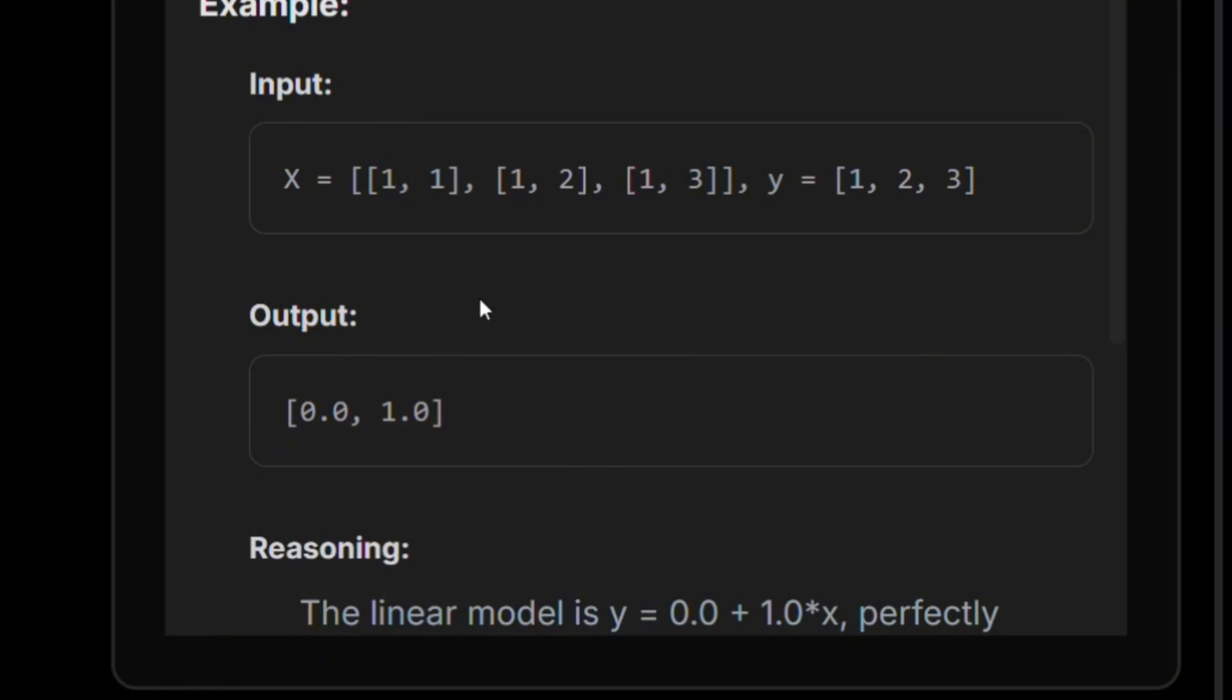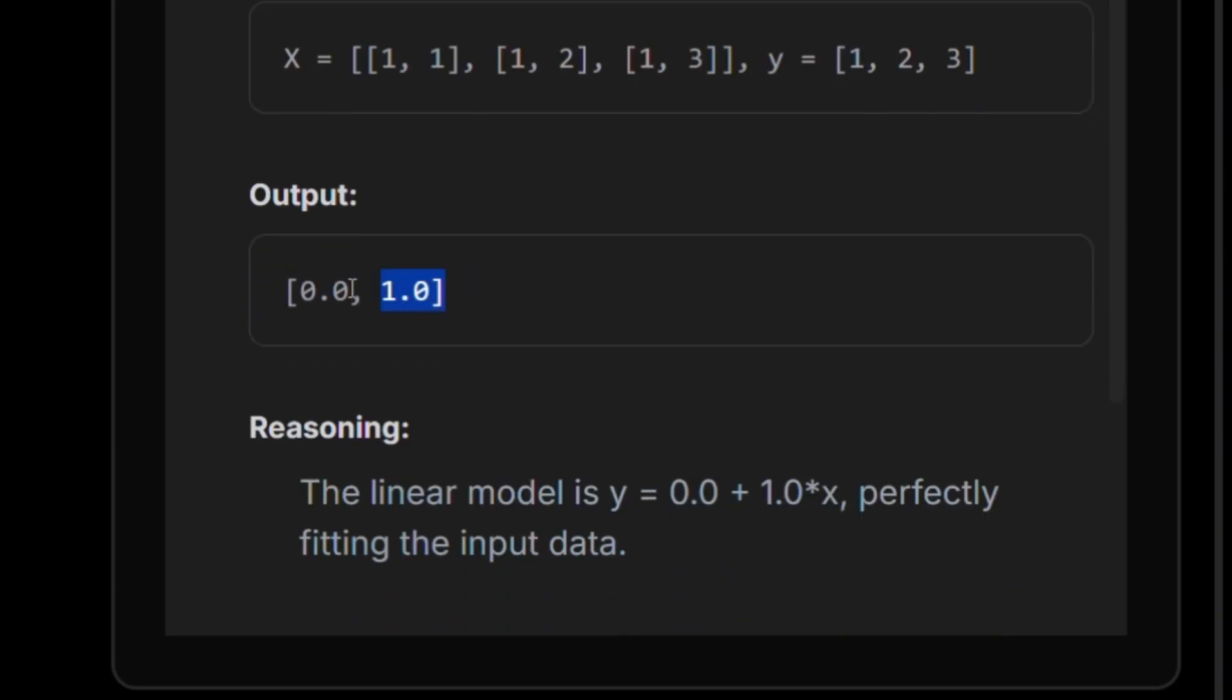So we're going to see that in a second over here. And as you can see, the output that we give is 0.0 and 1.0, which is the offset and the slope. Very cool.